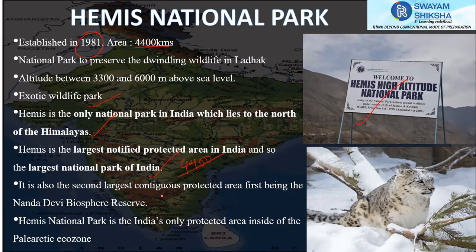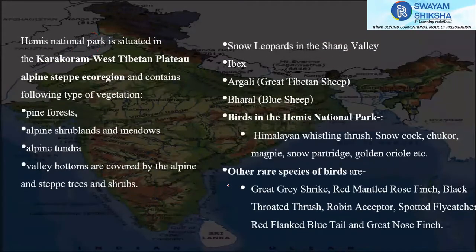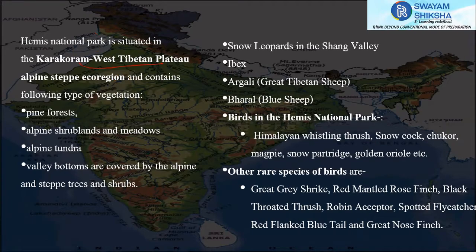Hemis is the second largest contiguous protected area after Nanda Devi Biosphere Reserve. It is the only protected area inside the Palearctic ecozone and has a wide range of flora and fauna. The park is situated in the Karakoram–West Tibetan Plateau, giving it alpine steppe vegetation, and preserves the wildlife of Ladakh. Its altitude ranges from 3,300 to 6,000 meters above sea level.